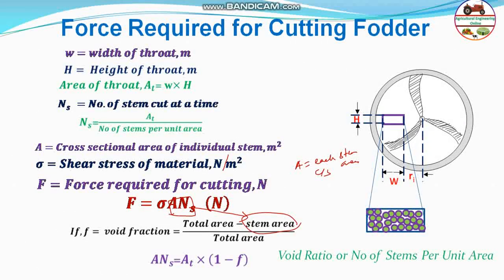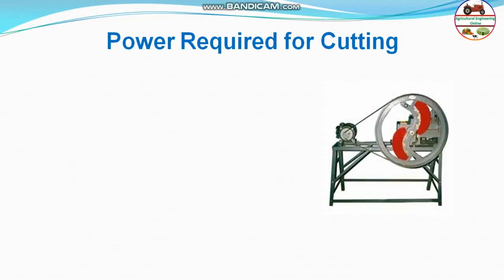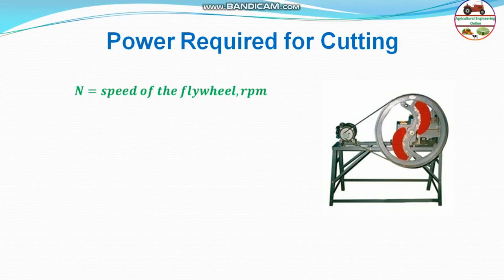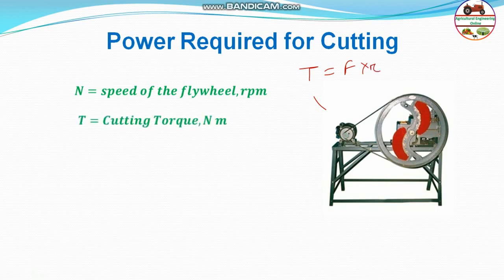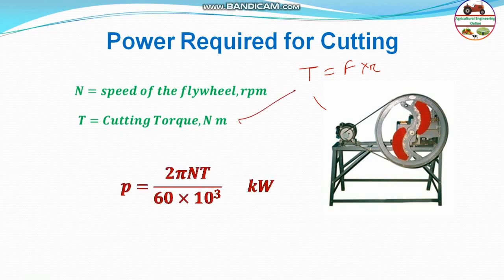Therefore ns equals At times (1 minus ff), where ff is the void fraction — this allows direct calculation of ns. Coming to power requirement: torque T equals force F times radius r, and n is the speed of the flywheel. Power P equals 2πnT divided by 60 times 10^3 kilowatts, giving the cutting power required.